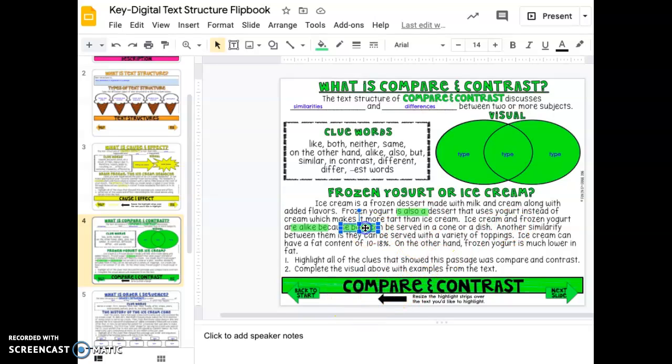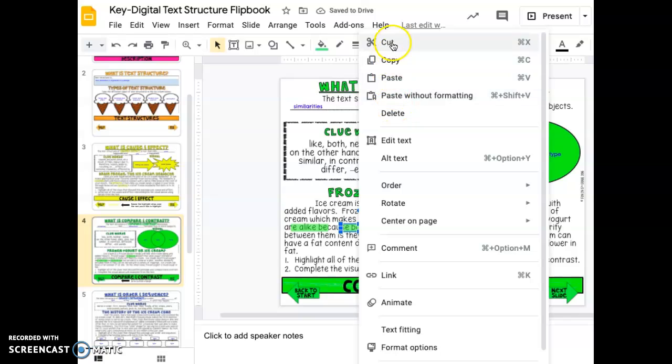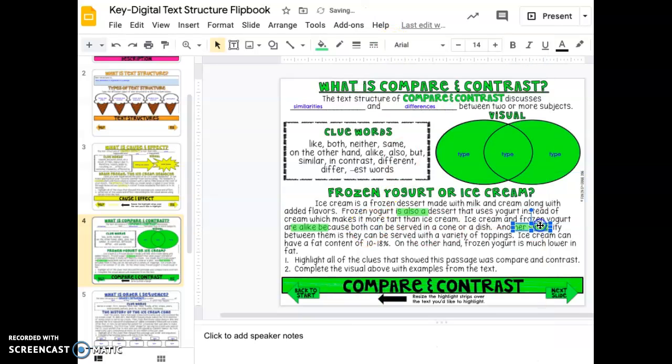Another similarity between them is that they can be served with a variety of toppings. Ice cream can have a fat content of 10 to 18 percent. On the other hand, frozen yogurt is much lower in fat. Notice that all of those are still up here as well. Those are our context clues.